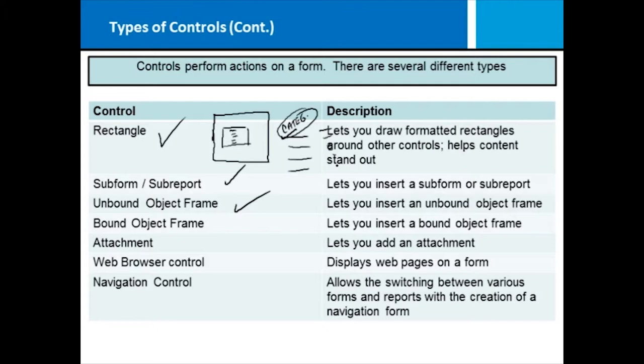We also have unbound object frames. An object is just anything you can put on there like a graphic—that's the one we use the most. Unbound simply means it's not bound to data in the database. So it might be that you want to use it for a company logo or some sort of design. That makes it different than a bound object frame because a bound object frame is actually bound to data. So in the example of using a picture, you might have an employee database and part of what you want is a picture of each employee. So this is an object—a picture—that's inserted but it's bound to a piece of data.